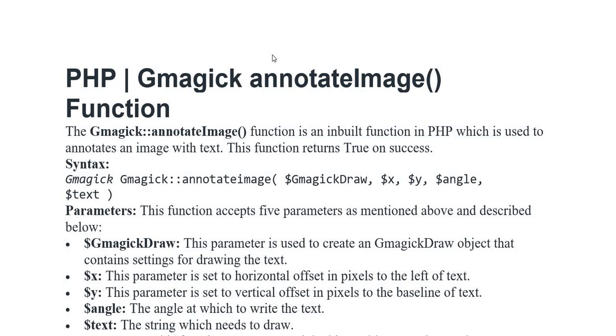This function returns true on success. Syntax: gmagick_annotate_image(variable gmagick, variable gmagick_draw, variable x, variable y, angle, and text) — yeh parameters put kiye gaye hain.